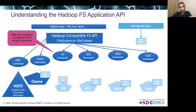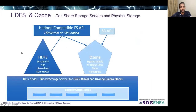Ozone also provides its own implementation, and big data applications can access Ozone using the Ozone file system. Non-big-data applications can access Ozone using the S3 API. Ozone has been designed to coexist with HDFS in a cluster, meaning Ozone data nodes can coexist with HDFS data nodes and they can access the same physical storage. Both systems can coexist and operate in an isolated manner in a cluster.